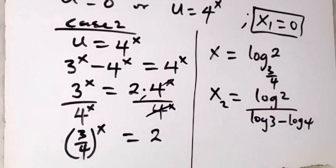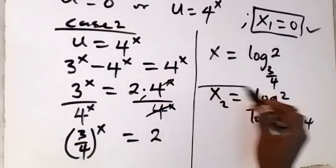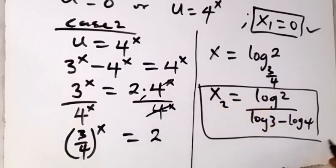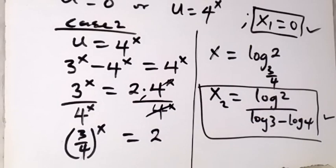So this is the second value of x. When we substitute our first value x equals 0, and our second value x equals log 2 over (log 3 minus log 4), into the original equation, we discover that both values satisfy the equation. Here we have come to the end of this class. Don't forget to like this video.